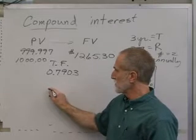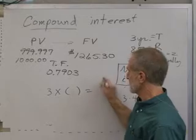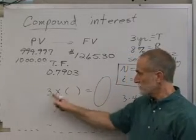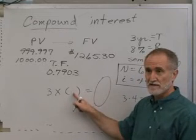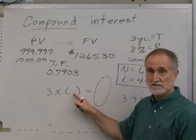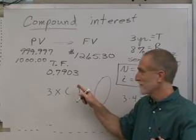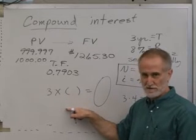If I started with a number and I wanted to multiply it by something and get something bigger, if I multiplied it by one, it would stay the same, wouldn't it? So if I wanted it to be bigger, what would I have to multiply it by? Something bigger than one, right? And if I wanted it to be smaller than this, I'd have to multiply it by something smaller than one.